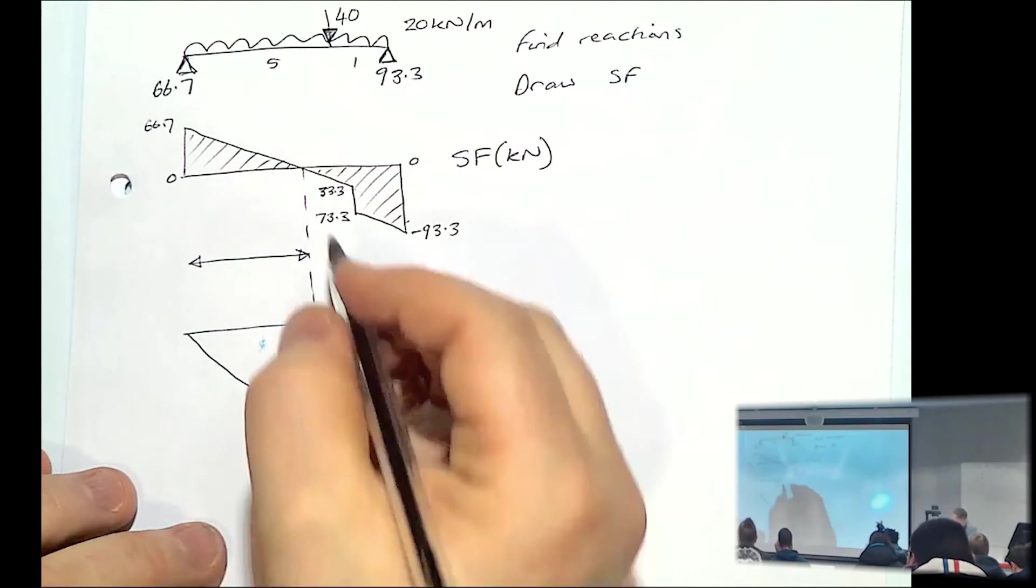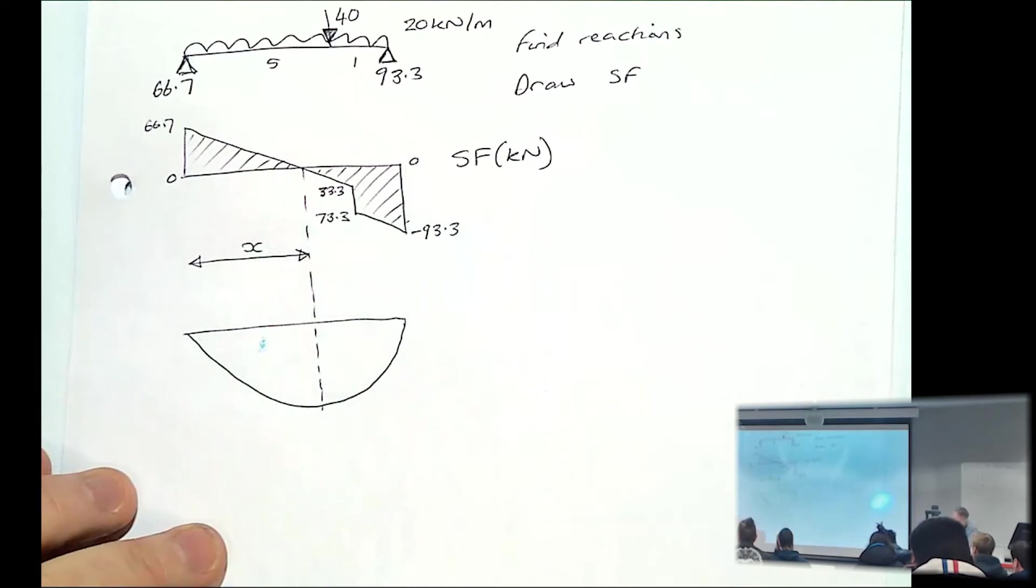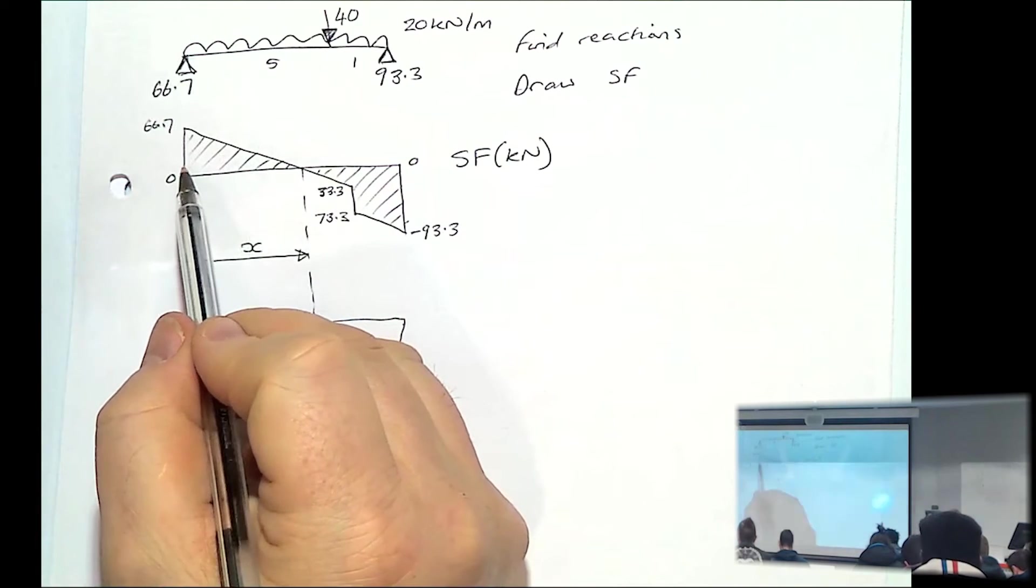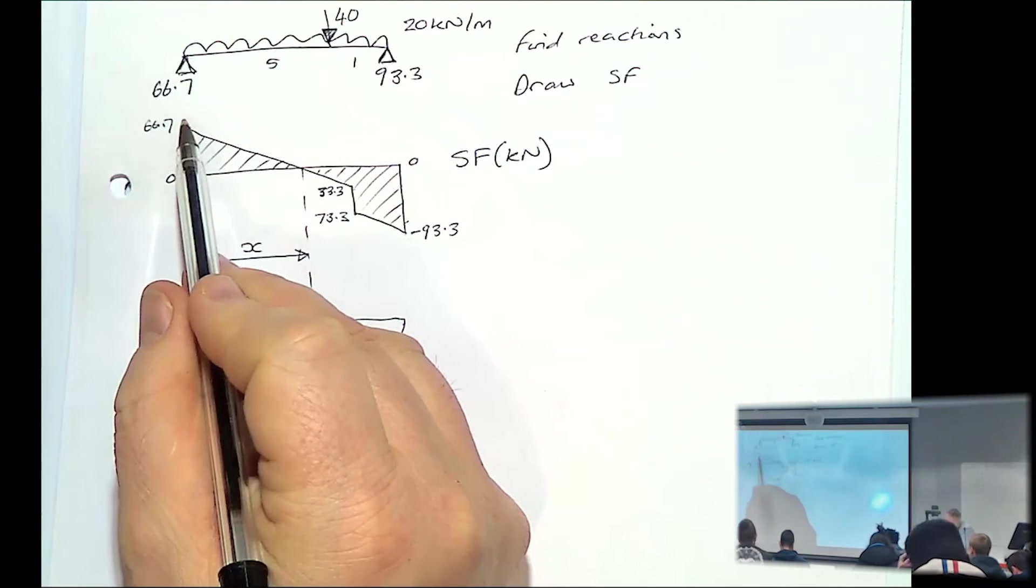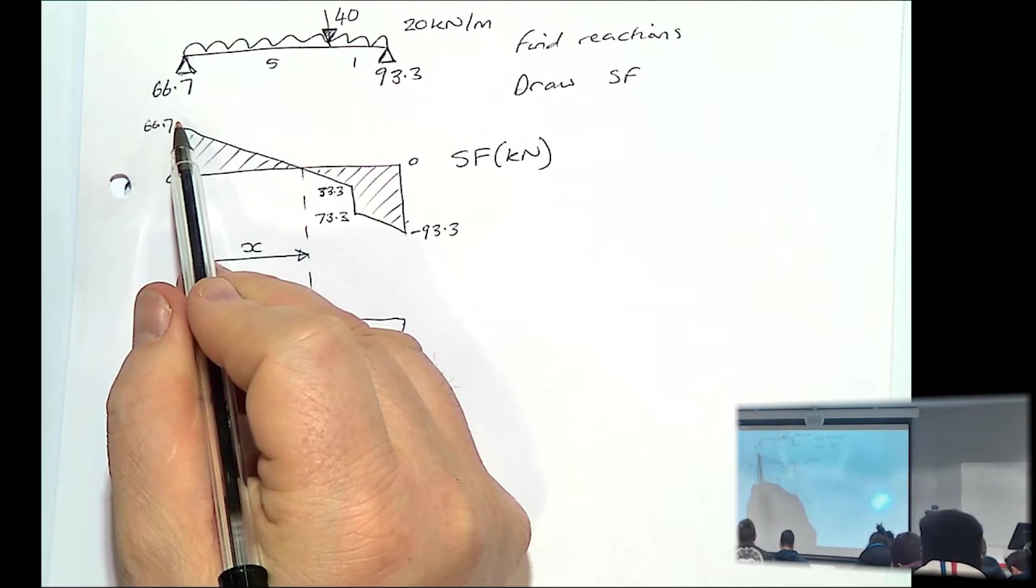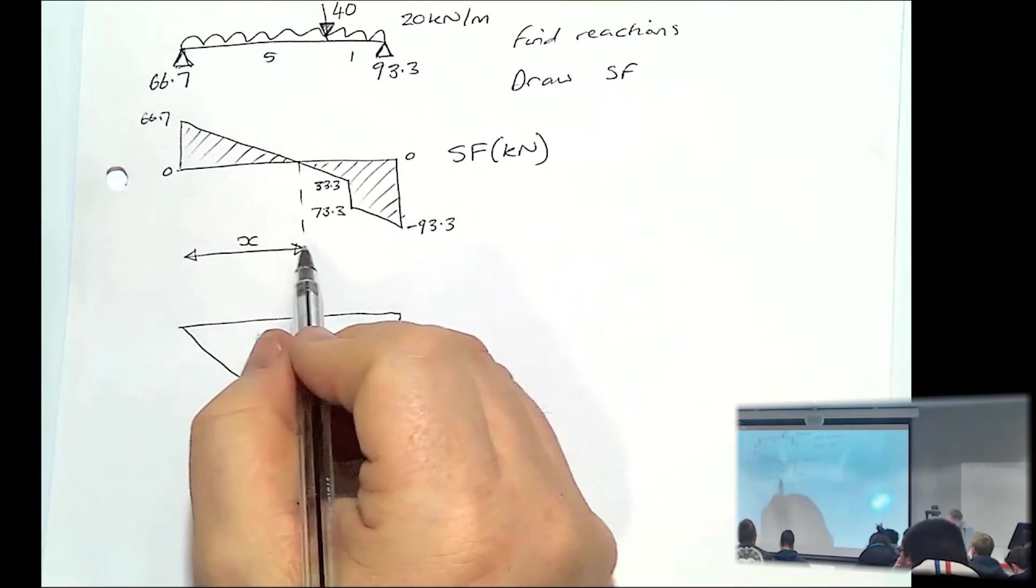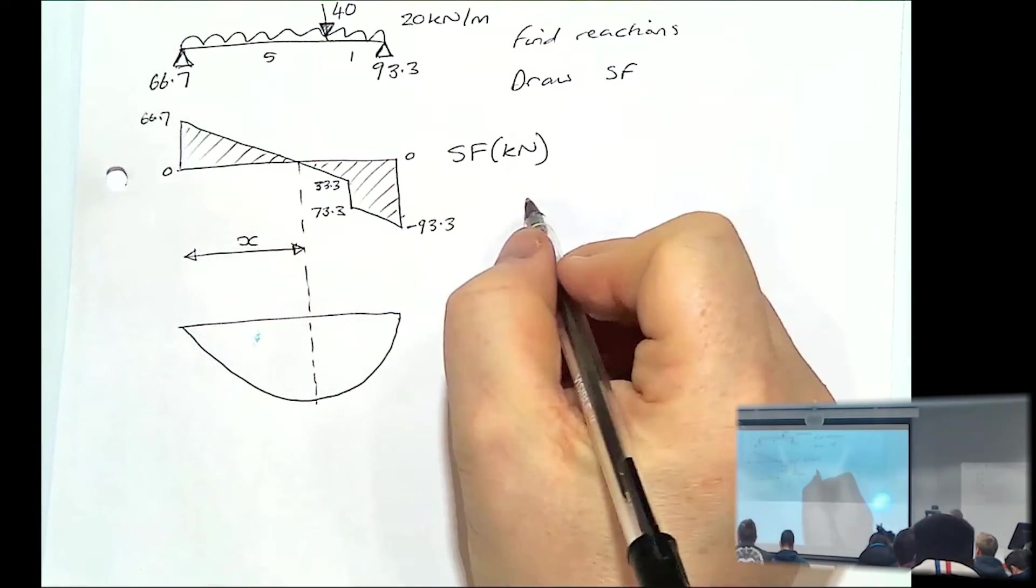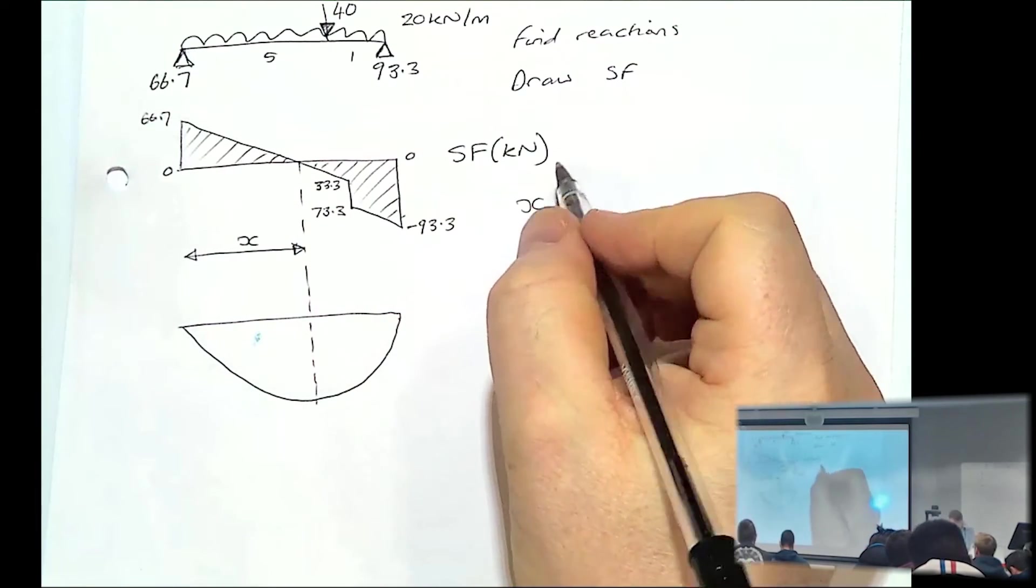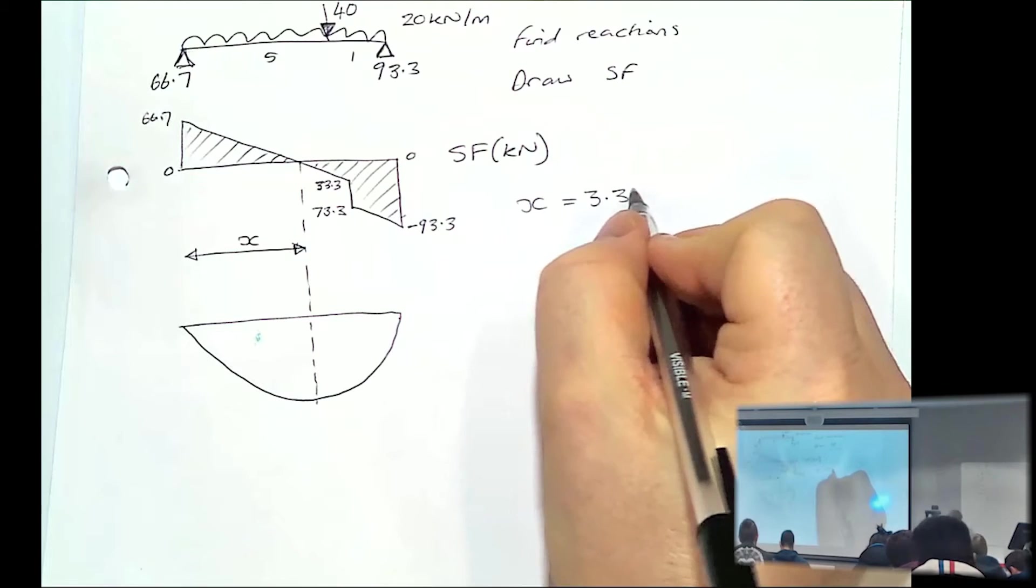If we call that x, if you write a little formula of 67 up minus 20 times by x, will give us our x value. So our x is 3.33 metres.